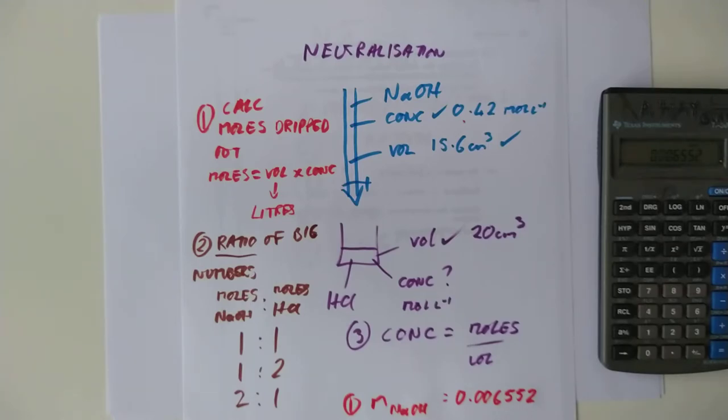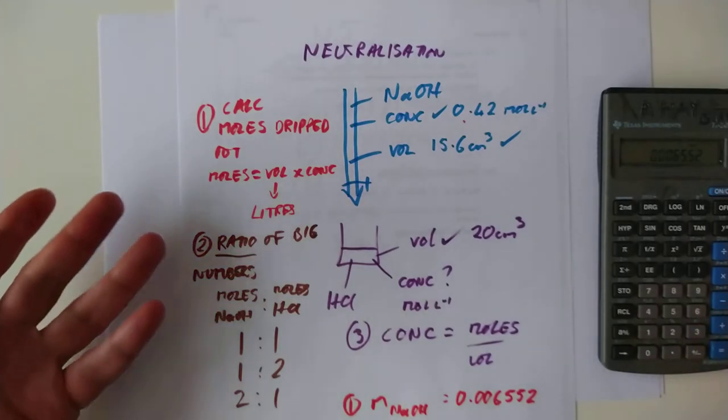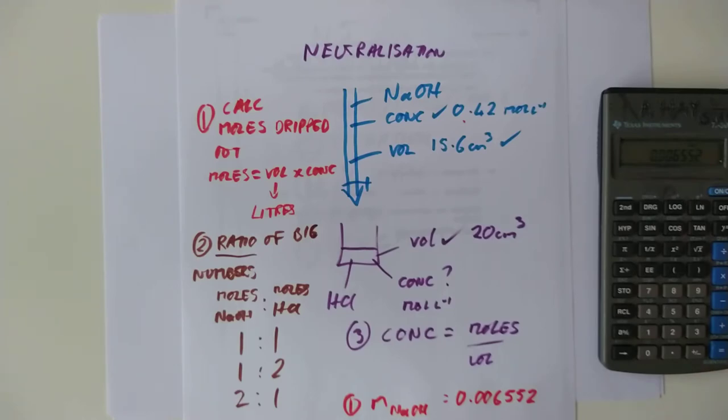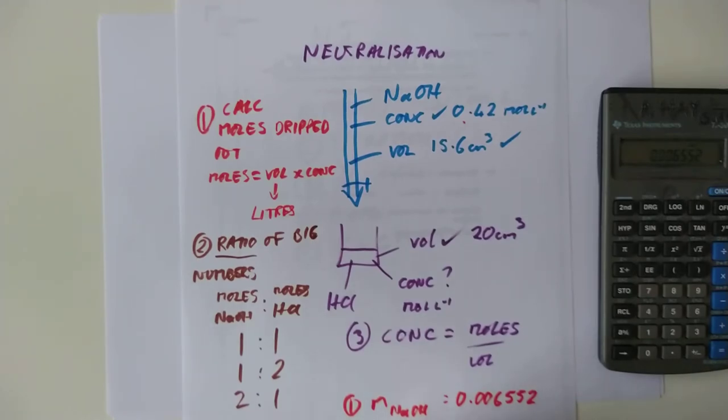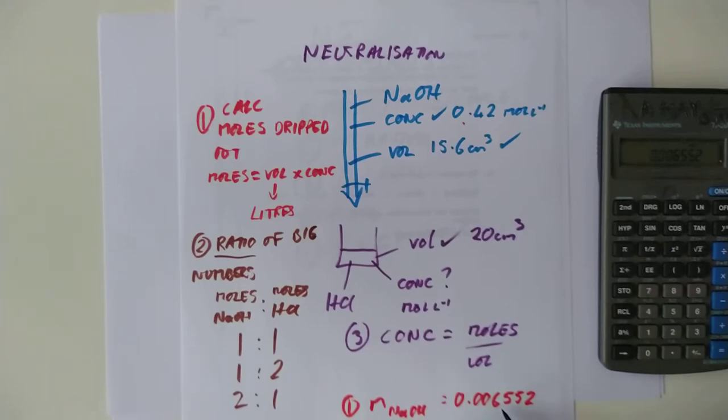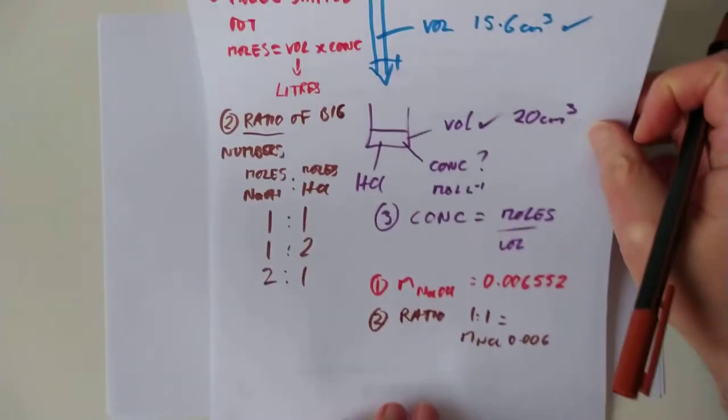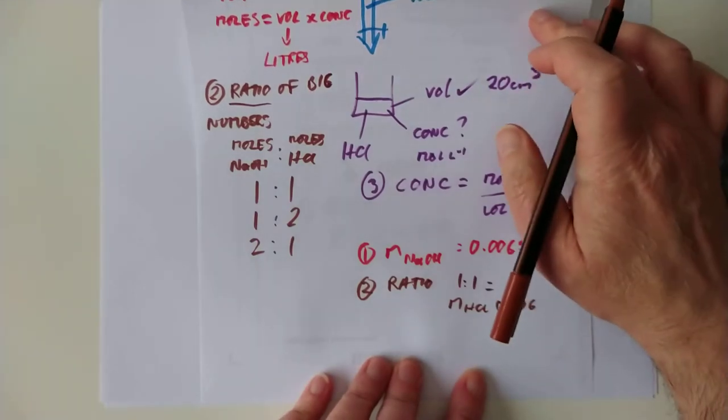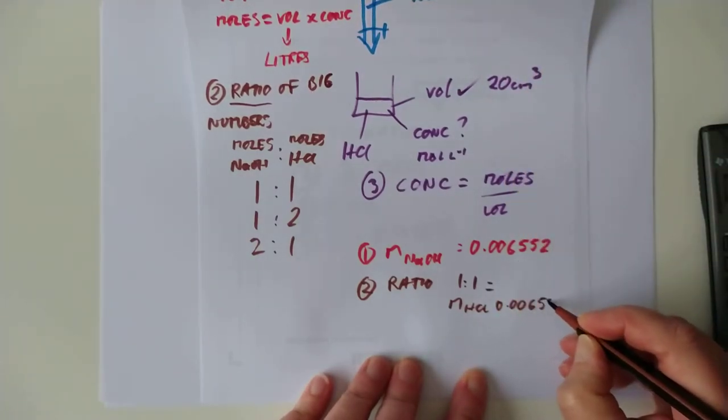My colour for the second one was brown. So, number two, the balanced equation. Very often the balanced equation is given to you these days, or alternatively, the earlier part of the question is for you to work out what the balanced equation is. I'm going to cheat with this because I know that the ratio here is just 1 to 1. So, the ratio is 1 to 1, which means if you had that number of moles of sodium hydroxide, you have got an identical number of moles of hydrochloric acid. So, that means the moles of HCl is 0.006552.